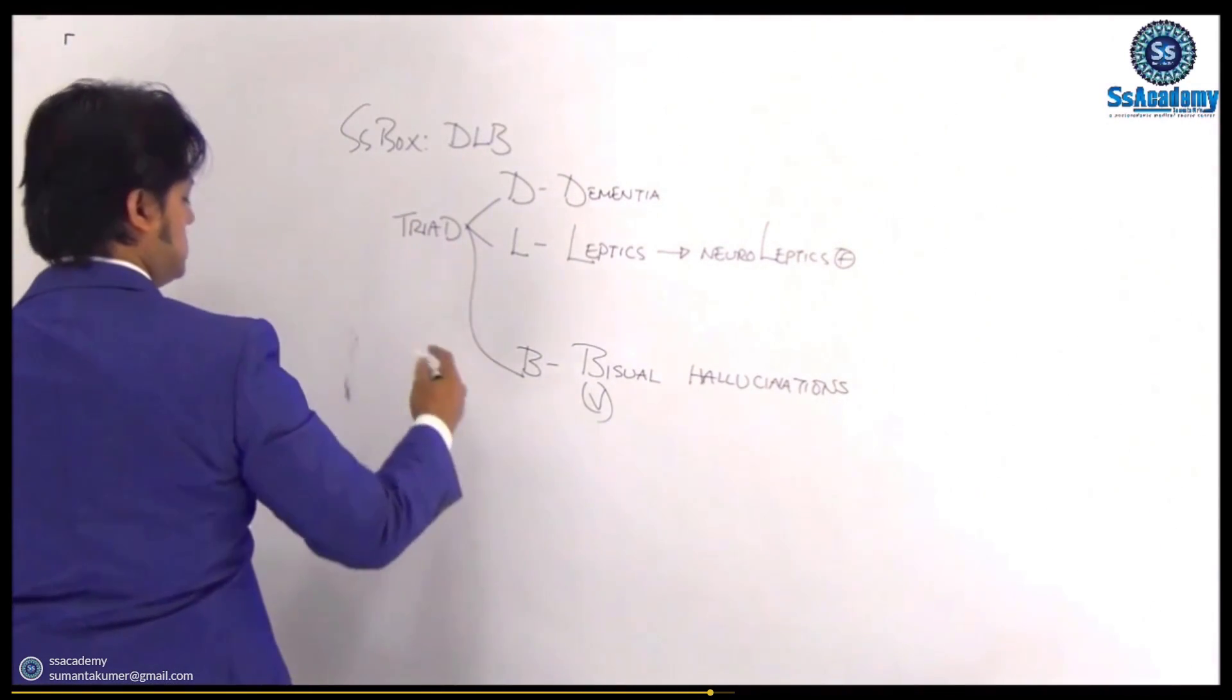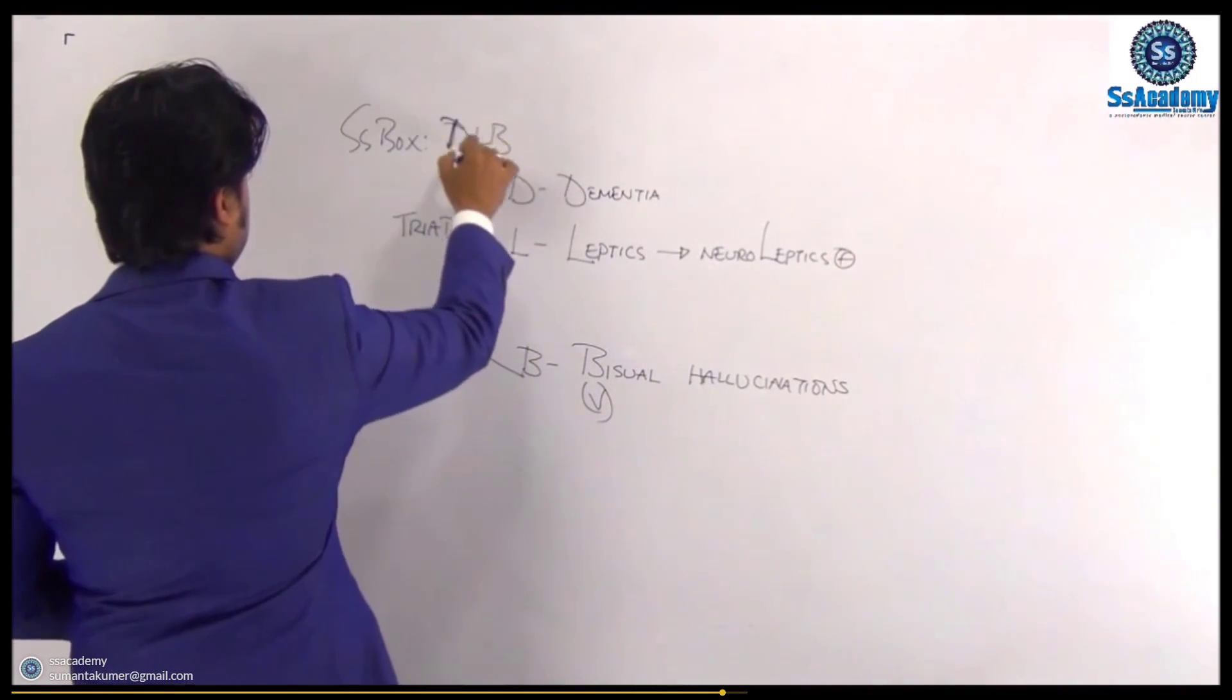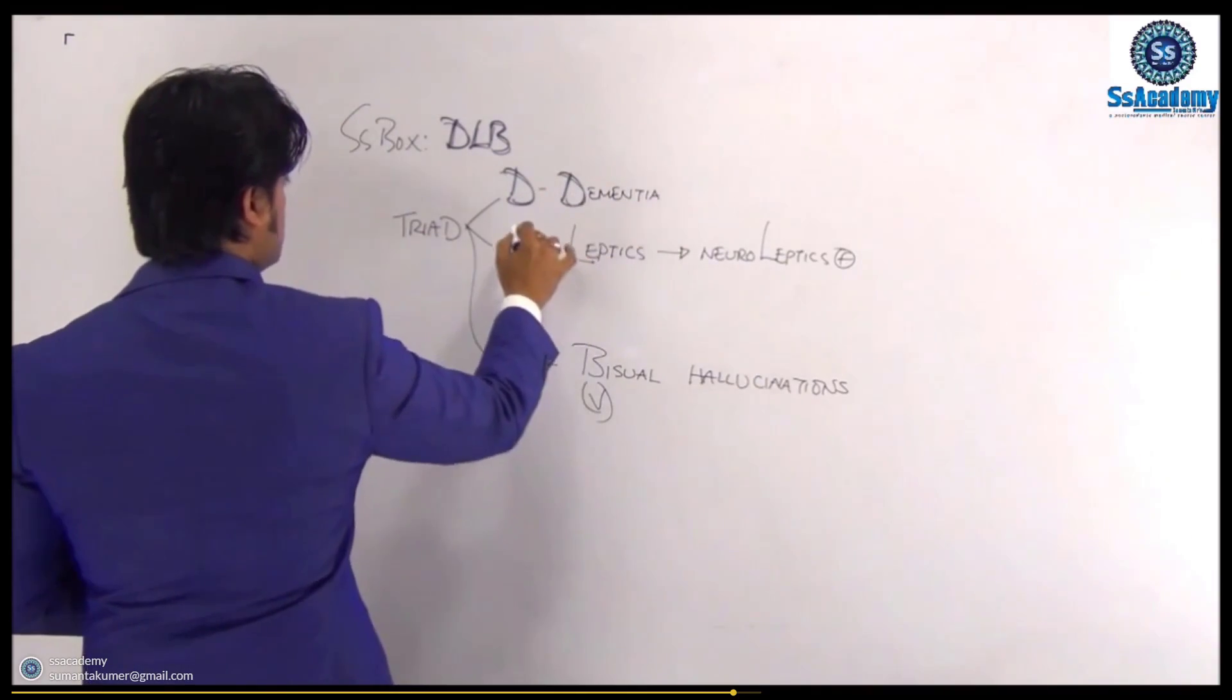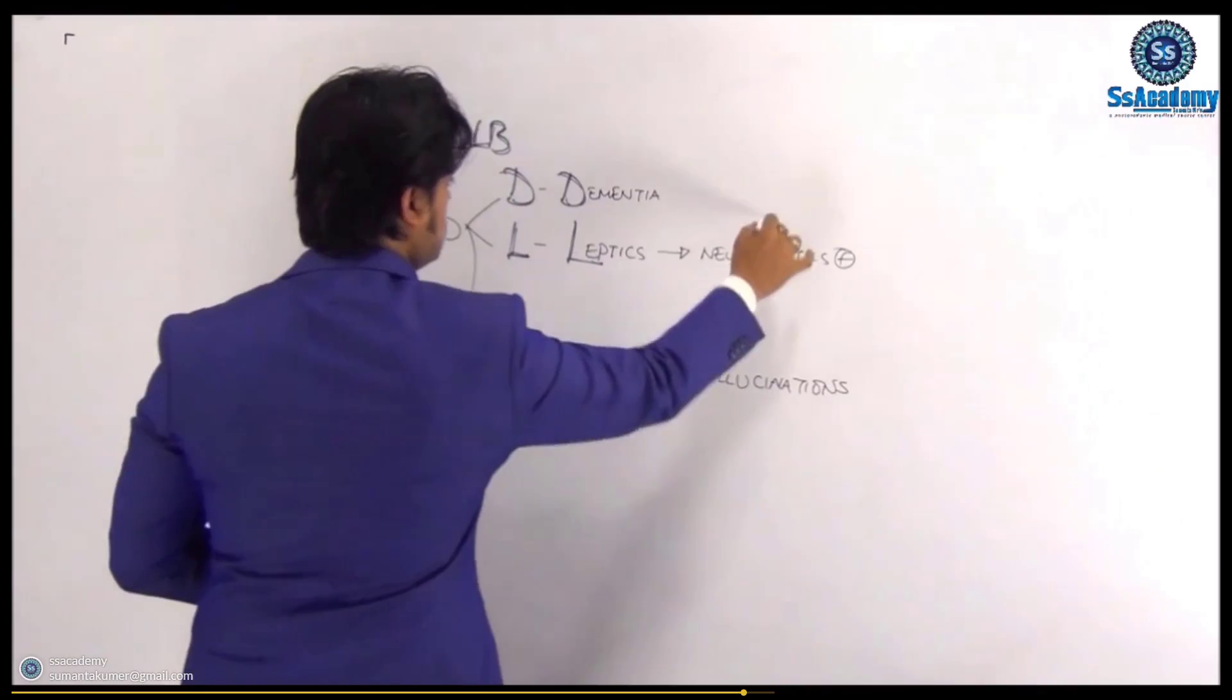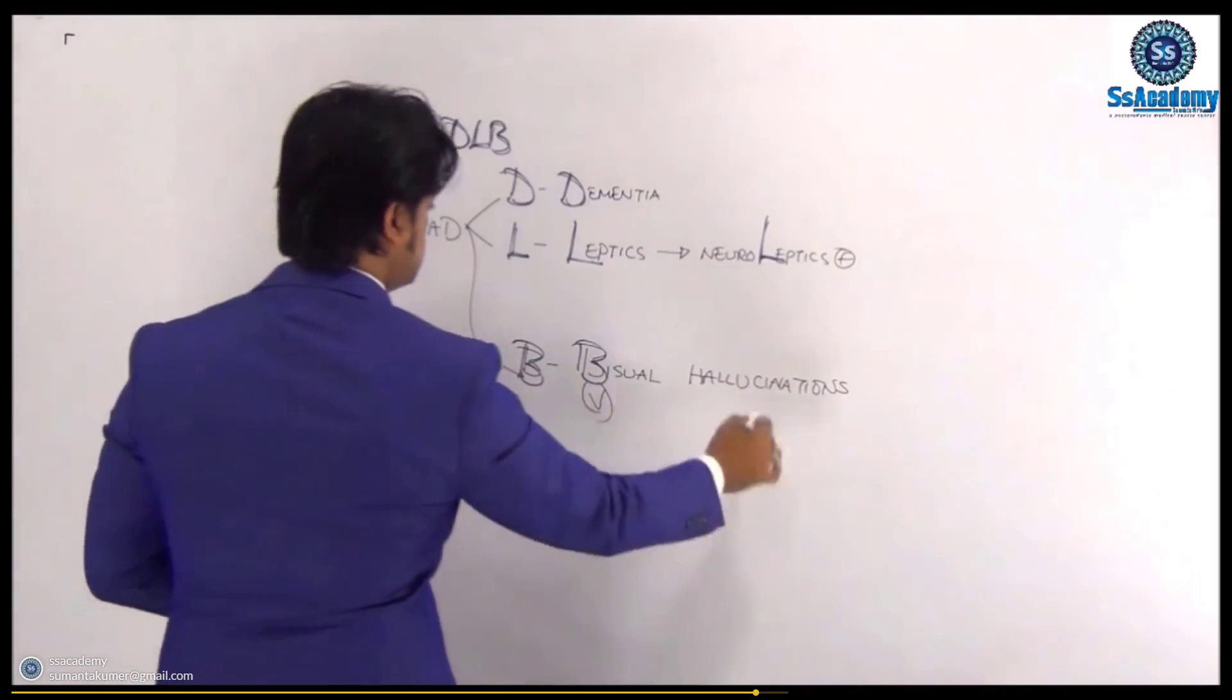So make a box with the target, that is what I say: DLB, or D for dementia, so progressive declining of cognitive function. L for neuroleptics, that is neuroleptics. And B for visual hallucinations.